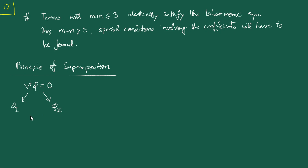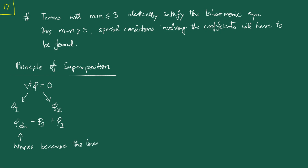Because of this linear nature of the governing differential equation — the biharmonic equation — it is very much possible to construct solutions. Given a new practical situation, it is very much possible to combine one solution with another to produce a new solution, and probably this combined solution is what is going to satisfy the physical requirements of a particular problem. We will actually see examples of this kind of superposition when we actually solve the problems.